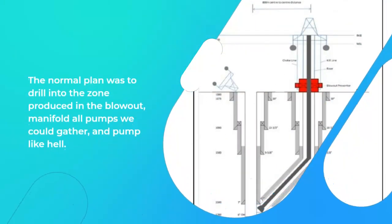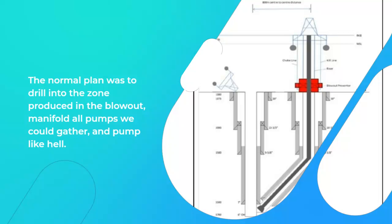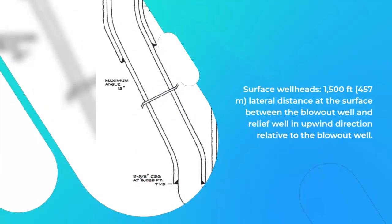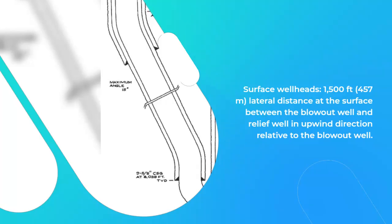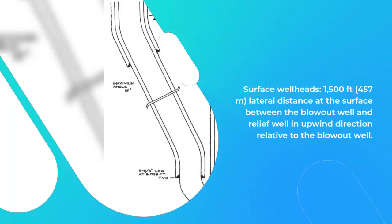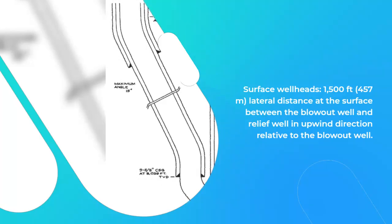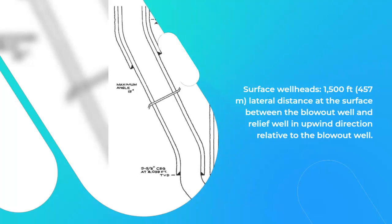The normal plan was to drill into the zone produced in the blowout, manifold all pumps we could gather, and pump at maximum rate. For surface wellheads, a lateral distance of 1,500 feet (457 meters) is required at the surface between the blowout well and relief well, in the upwind direction relative to the blowout well.